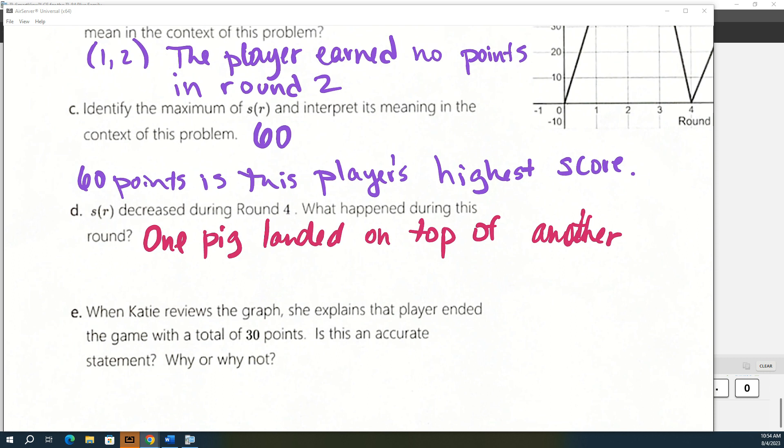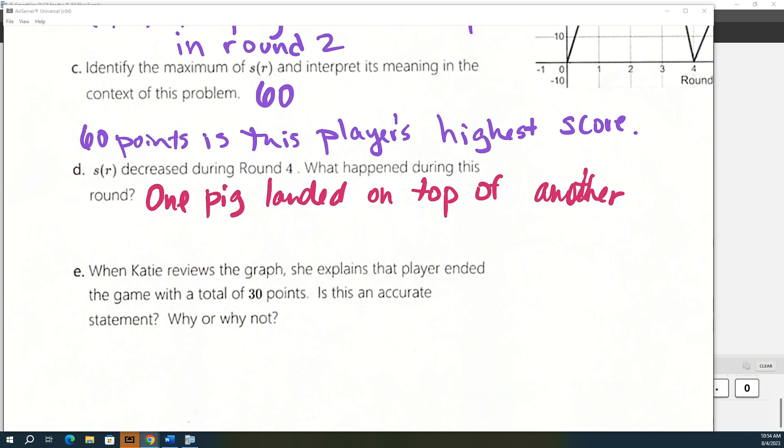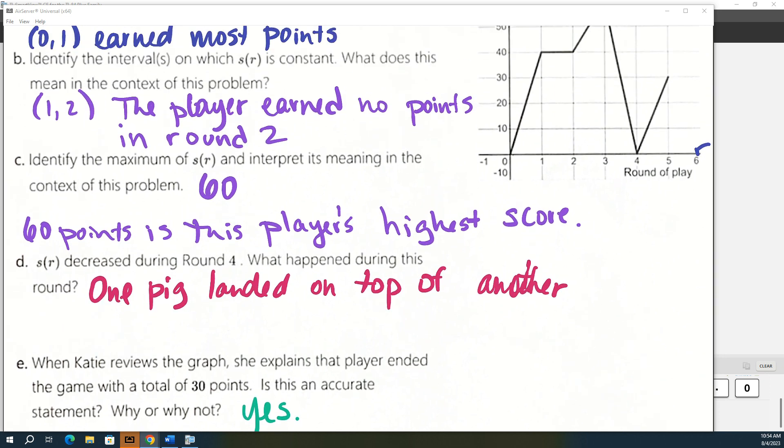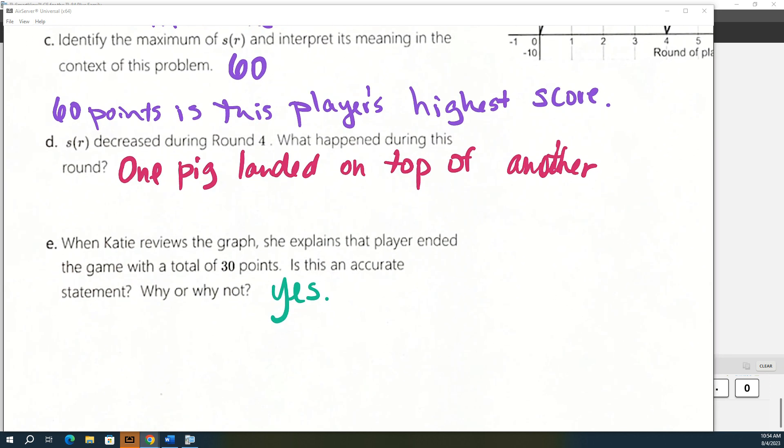So when Katie reviews the graph, she explains that the player ended the game with a total of 30 points. Is this accurate? I think so. As long as I understand this game right, the only thing that might not be accurate is if there were more rounds after round five. But I'm going to say yes as long as the game ended at round five.